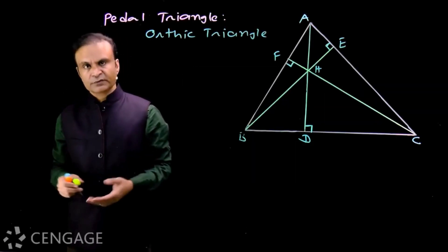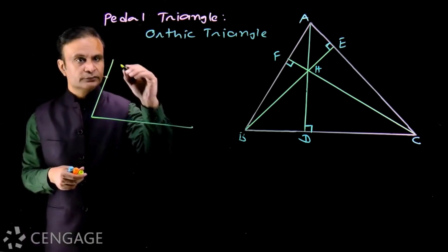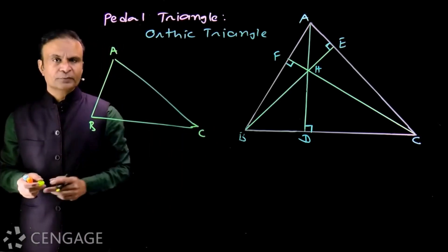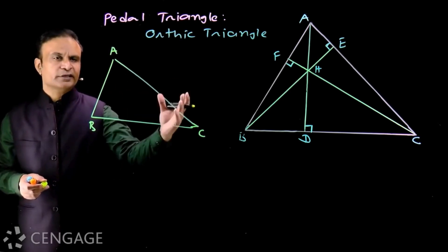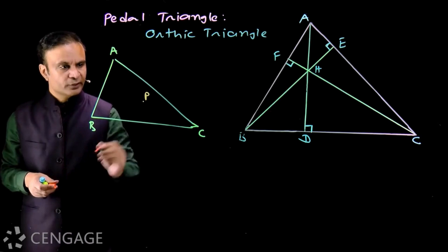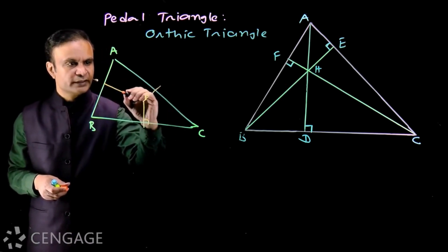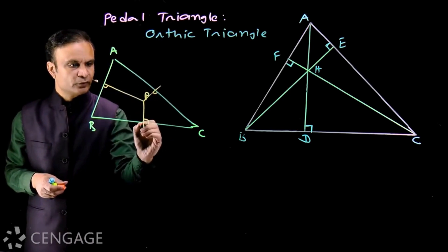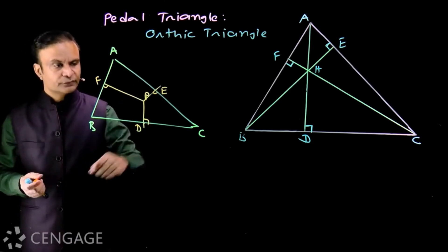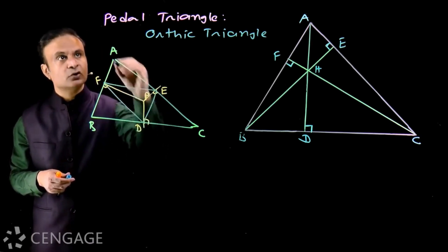Let's see what a pedal triangle is. Consider triangle ABC with a point P in the plane of ABC — P may be inside, outside, or on the triangle. From point P, draw perpendiculars to the sides. The feet of these perpendiculars are D, E, and F. The triangle DEF formed by these feet is called the pedal triangle.